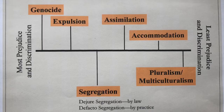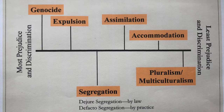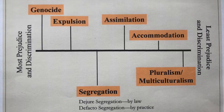This video covers the group relations continuum. When we talk about relationships between different ethnic, racial, or religious groups, there are several different types of relationships those groups can have. Looking at this chart, you can see it's set up as a continuum — running from one extreme to the other — with one, two, three, four, five, six different types of relationships.